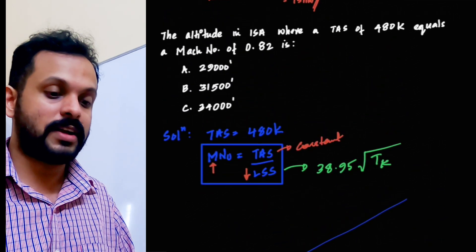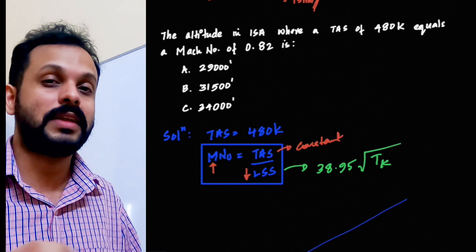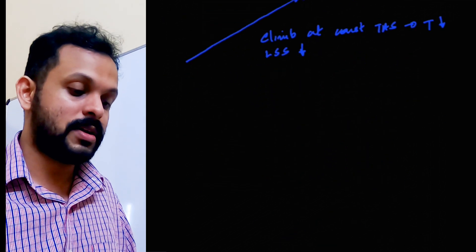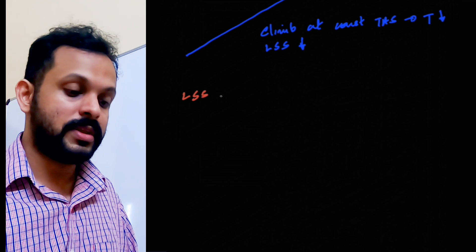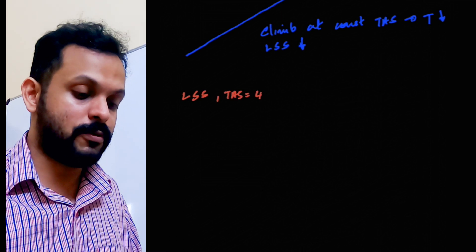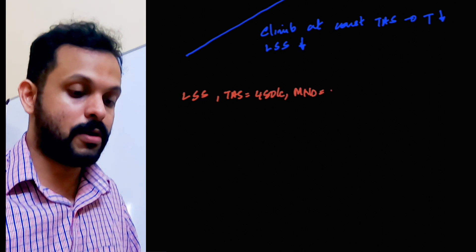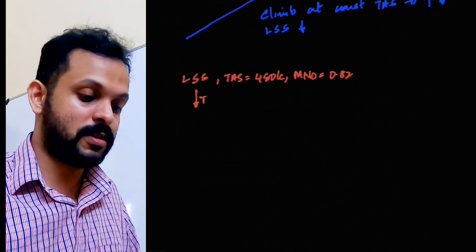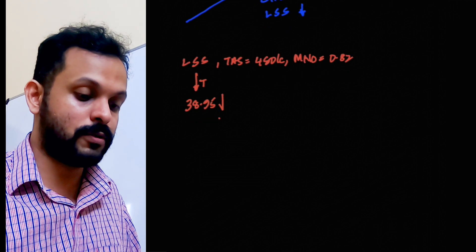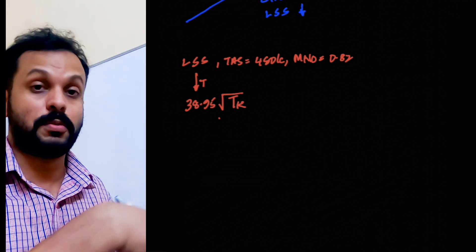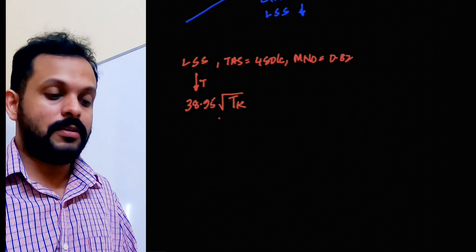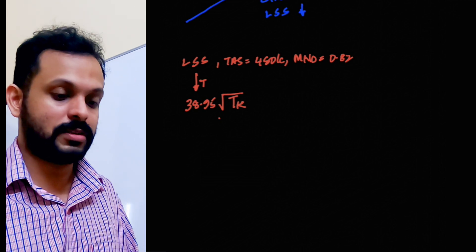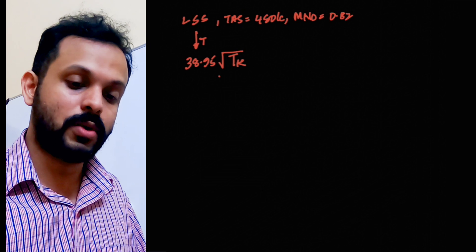Now, in this particular question, you are asked to find out that particular altitude where the Mach number would be 0.82 corresponding to a TAS of 480 knots. So what we are trying to do here is, we are basically trying to find out the local speed of sound corresponding to a TAS of 480 knots and a Mach number of 0.82. And since we know that the local speed of sound depends on temperature, using the relation 38.95 root of temperature, it is very important to understand that it is in Kelvin. And if I know the local speed of sound, then I can find the temperature in Kelvin and then if I remove 273 from that, I will get temperature in degrees Celsius. Let's dive into the question. Let's first find out the local speed of sound.